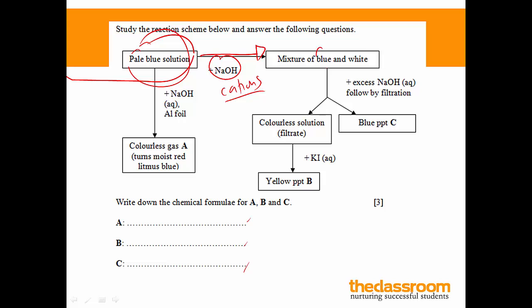You have two precipitates form, a blue and white precipitate. Now this means that you have two cations present. The blue precipitate is usually copper 2 hydroxide. Now the white one, we're not too sure. White precipitates in your syllabus will include calcium, zinc, or lead 2-plus ions.